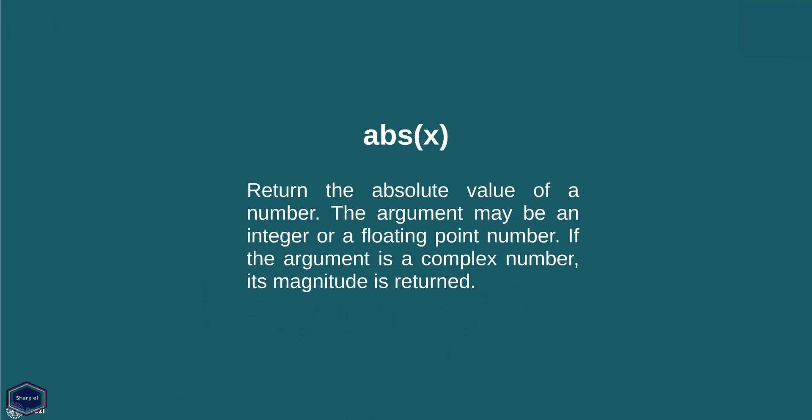Today we are going to start with the absolute value function. Absolute value function is one of the easiest functions in Python and it returns the absolute value of an argument passed in its parentheses. If we pass a complex number as an argument, the magnitude of the complex number will be returned.